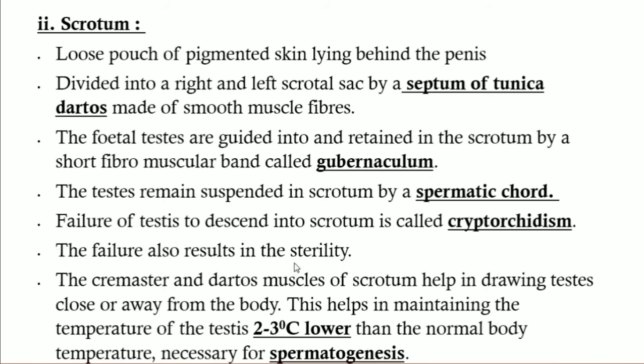This condition of cryptorchidism results in sterility — the person cannot reproduce. This is because the testes remain inside the abdominal cavity at body temperature, which is too high for sperm formation. At that high temperature, sperm cannot survive, and such a person is not able to reproduce. This condition leads to sterility.